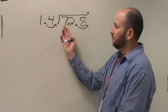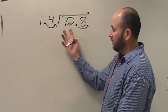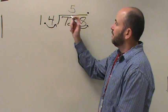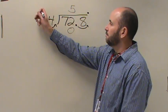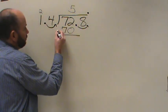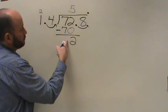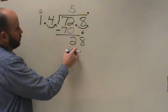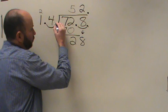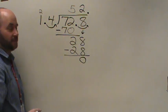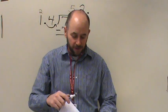Ask yourself how many times can 14 go into 7 — it can't. How many times can 14 go into 72? It would be 5. 5 times 4 is 20, carry your 2. 5 times 1 is 5, plus 2 more gives you 7. Subtract. Partial remainder of 2 is good compared to 14. Bring down your 8. 14 into 28 goes twice. 2 times 4 is 8, 2 times 1 is 2. Subtract and you end up with 0. And that's how you do these problems.